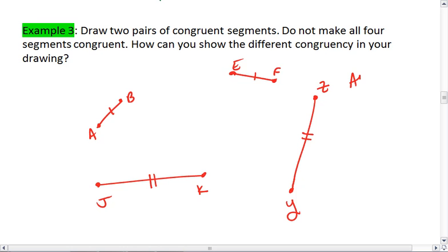Thus, I see that AB is congruent to EF, and JK is congruent to YZ. This also means that the length of AB is equal to the length of EF, and that the length of JK is equal to the length of ZY.